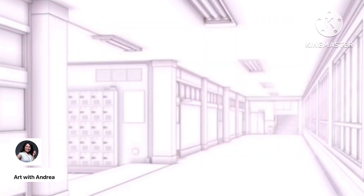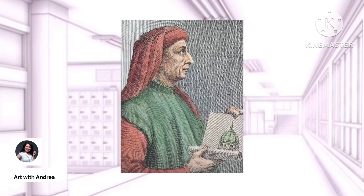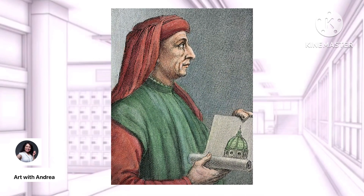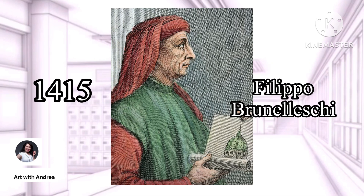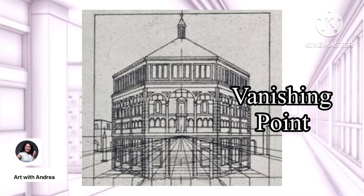When did one-point perspective first begin? It was first created in 1415 by Italian architect Filippo Brunelleschi during the Italian Renaissance. This is when he developed the mathematical principles of linear perspective, which includes the concept of the vanishing point.